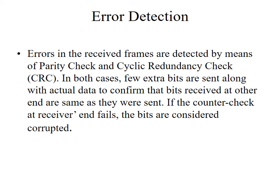Next is error detection — how we detect the error after receiving at the receiver side. The sender is able to send the data to the receiver, but the receiver needs to identify whether it received the correct data or corrupted data. This is checked using the parity check as well as the cyclic redundancy check. In both cases, a few extra bits are sent along with the actual data to confirm that the bits received at the receiver side are the same as those sent from the sender side.